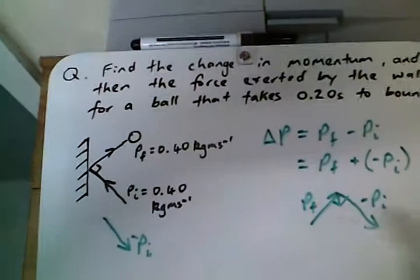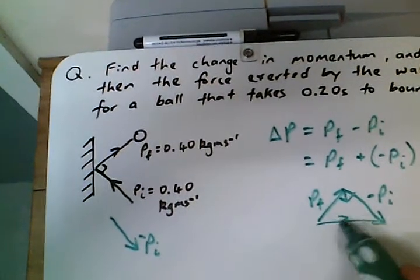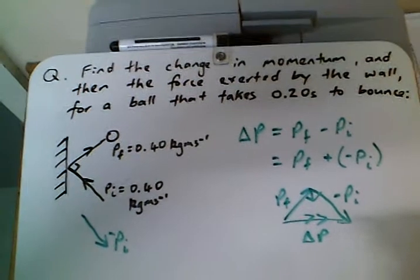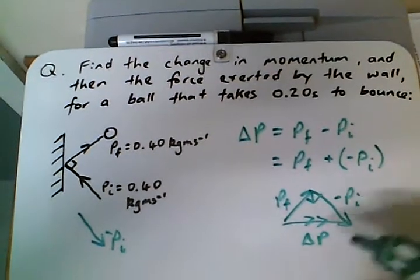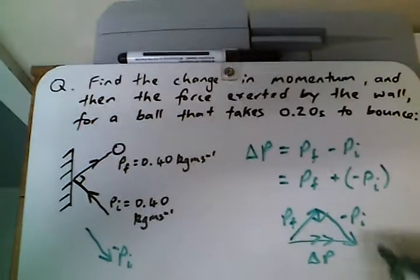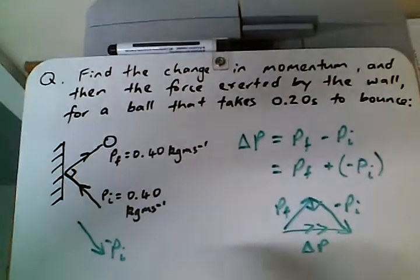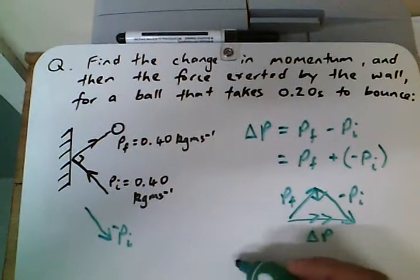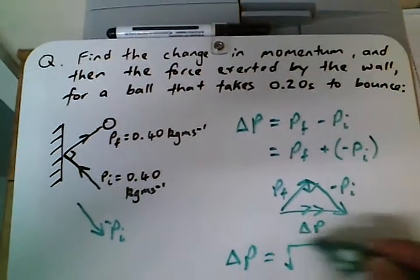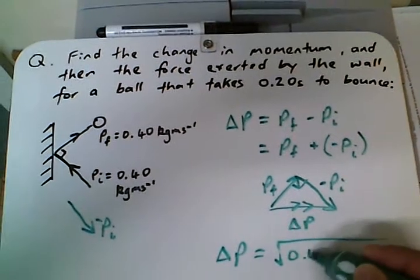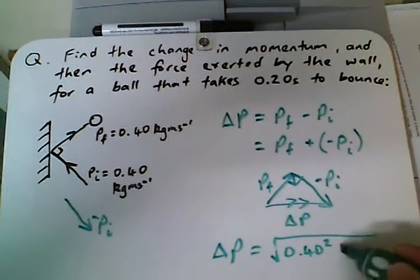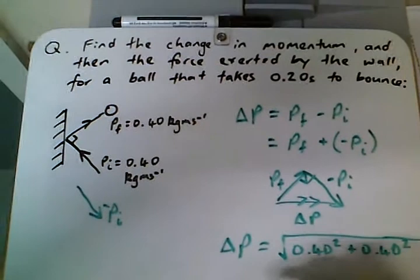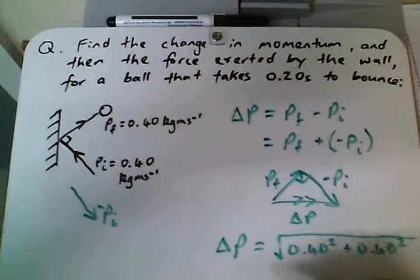Then our resultant, our change in momentum, is there. Then we can use Pythagoras to work out what change in momentum is. Since Pf is 0.40 and Pi is 0.40, change in momentum is the square root of 0.40 squared plus 0.40 squared, which I'm not going to work out just now but that equals whatever it equals.